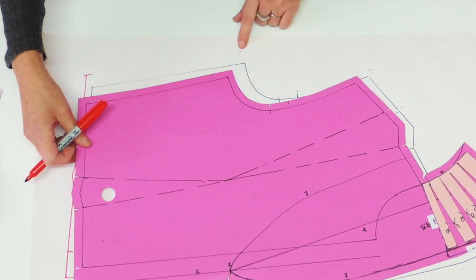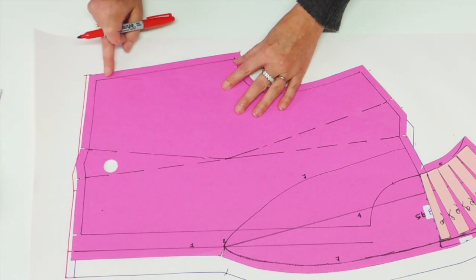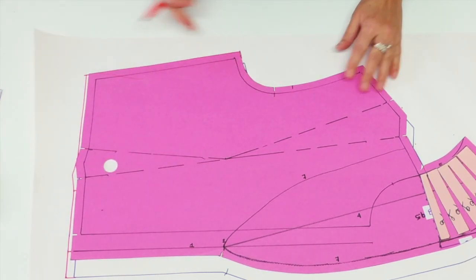You can now do the side seam, so from underarm point until the last point at the waist. And I always do a little bit the corner.